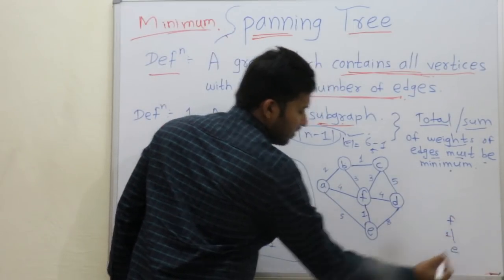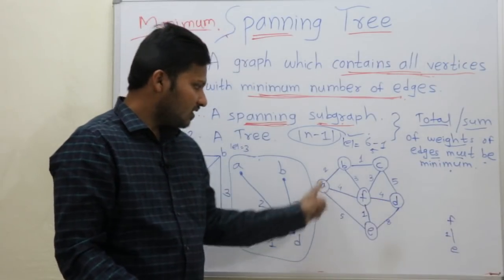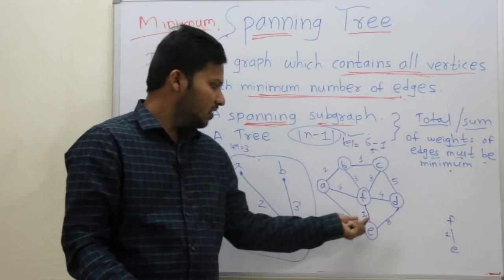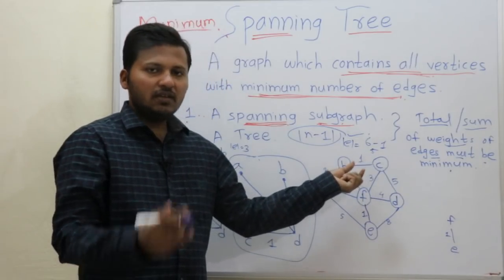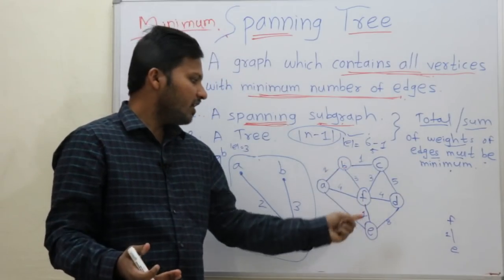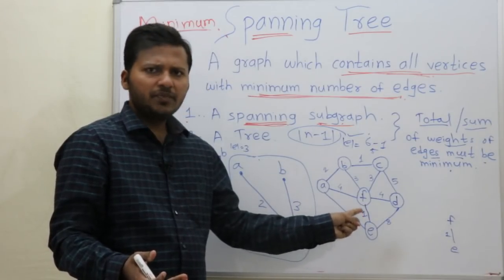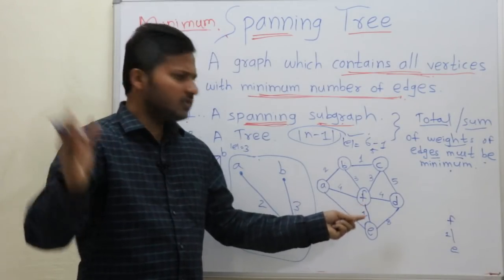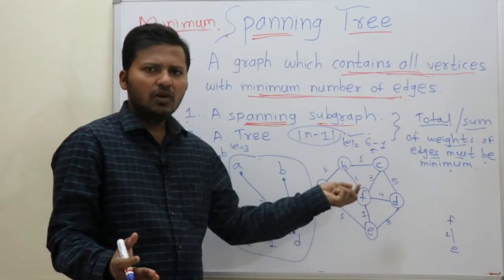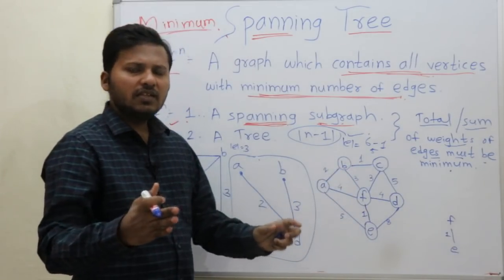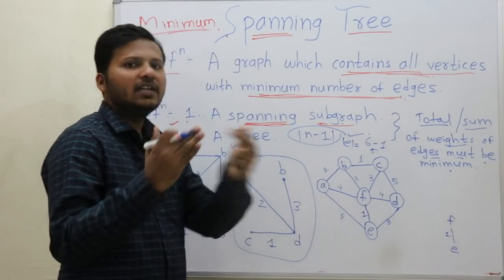Now let us check whether there is another weight of 1 — yes, there is another weight of 1. Any number of weights can have value 1, so you have to take all those edges. The only condition is that it should not form a cycle while adding them.